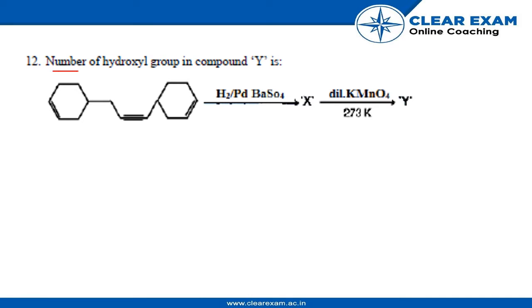The question is: number of hydroxyl groups in compound Y. This compound reacts with hydrogen, palladium, and BaSO4 to form X. Then X with dilute KMnO4 at 273 Kelvin results in the production of Y, so we have to count the number of hydroxyl groups.